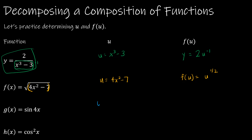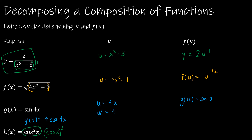For y = sin(4x), u = 4x and g(u) = sin(u). It's tempting to say the derivative is cos(4x), but you also have to account for the derivative of 4x, which is 4. So g'(x) = 4cos(4x). For the last one, cos²(x) is actually (cos x)², so u = cos(x) and h(u) = u².